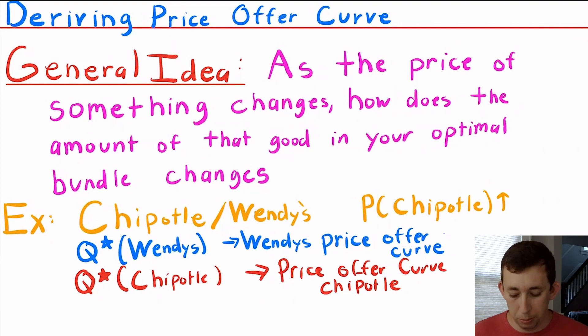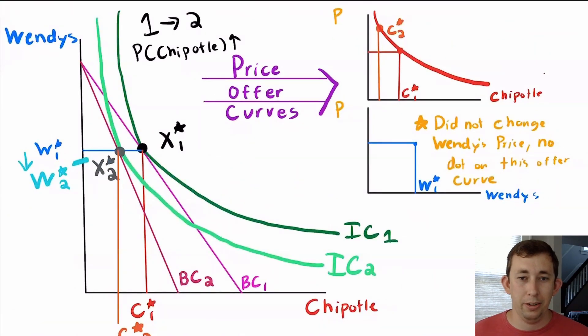When I change the price of Chipotle, we're going to focus on some graphs. Here are the graphs we're working with today. Let's start with the large graph on the left-hand side. This is a graphical representation of a utility maximization problem.